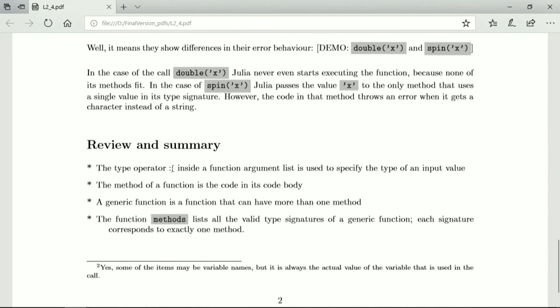So the type operator inside a function argument list is used to specify the type of an input value. This is when we define the function. And then the function of a method is the code in its code body. A generic function is a function that can have more than one method, and we can list all the valid type signatures of all the methods of a generic function. Each signature corresponds to exactly one method.